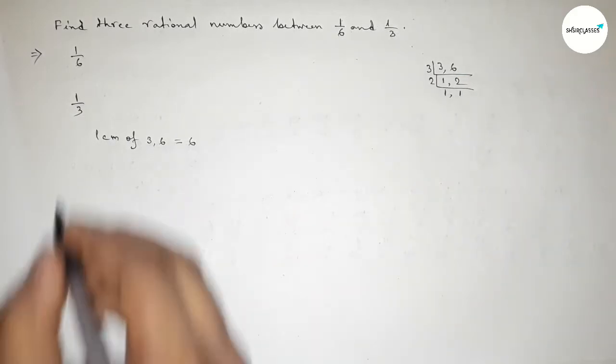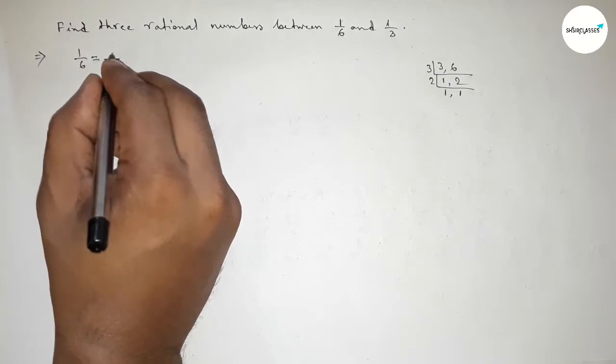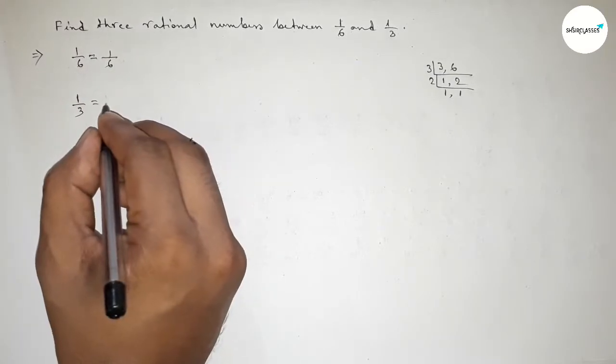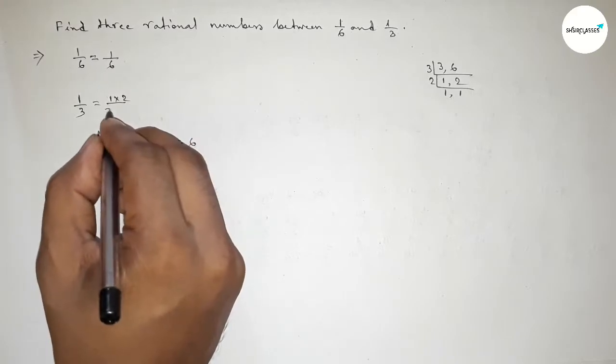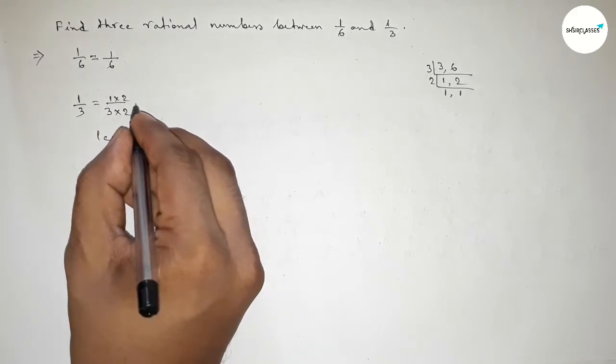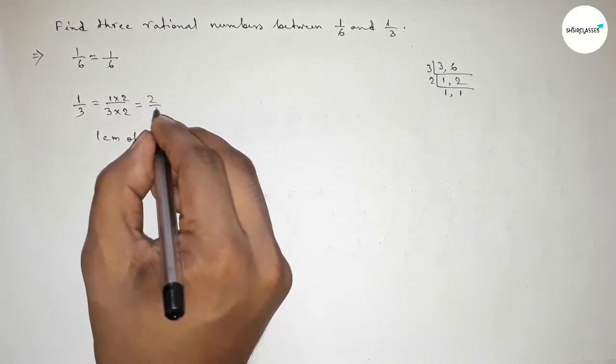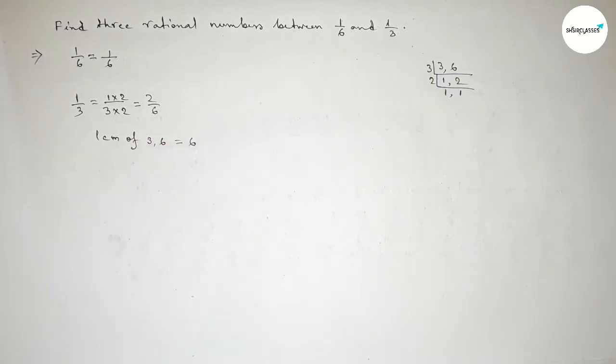So now taking the multiplication, and obviously 6. First here multiplying up and down by 1, so 1 over 6. And here multiplying by 2 up and down, so this is 2 over 6.